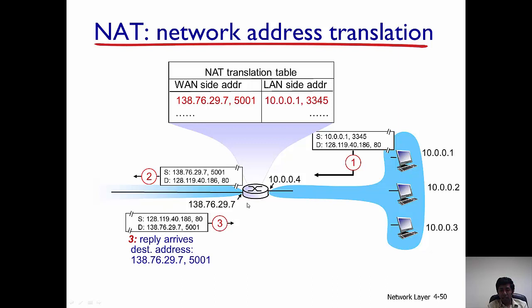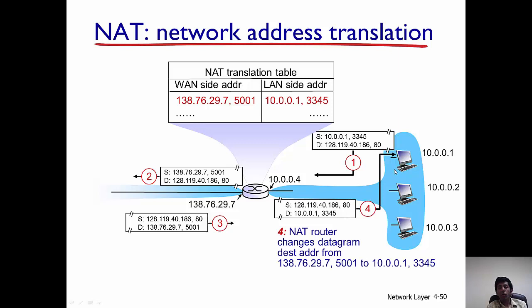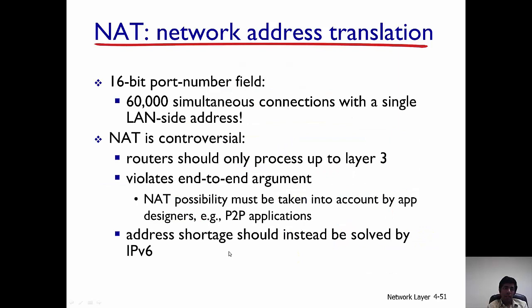When a response comes back, it is addressed to 138.76.29.7 at port 5001. The router consults the NAT translation table and finds that a datagram addressed to itself at port 5001 is actually meant for host 10.0.0.1 at port 3345. It then forwards the datagram to that particular host. This is how network address translation works.